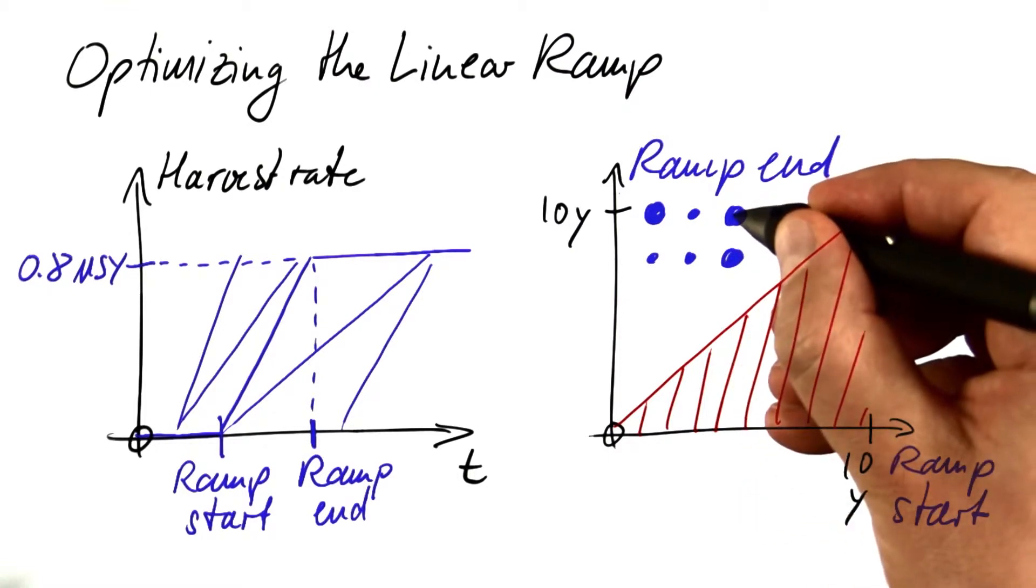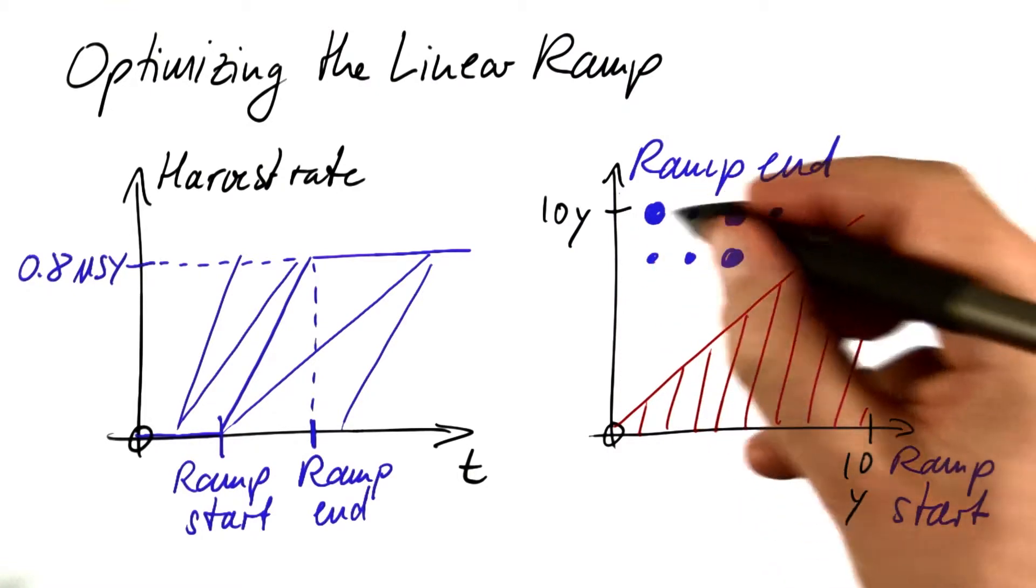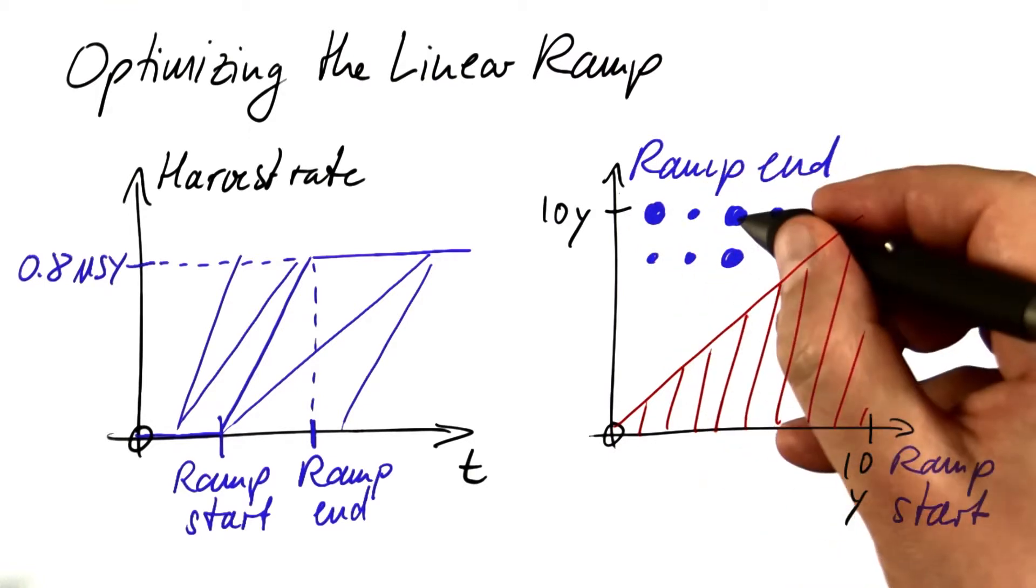So this blue dot would mean that this specific combination of parameters leads to a rather large total amount.